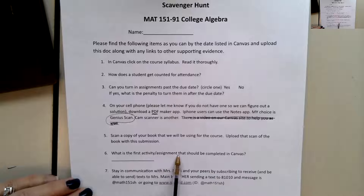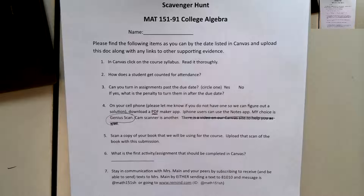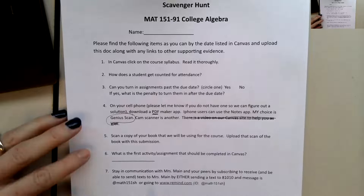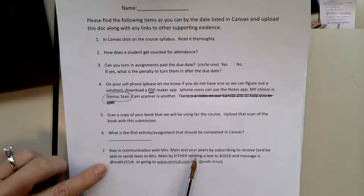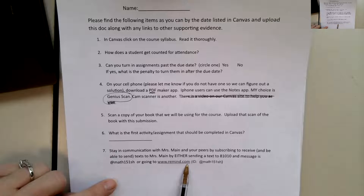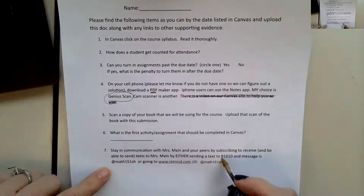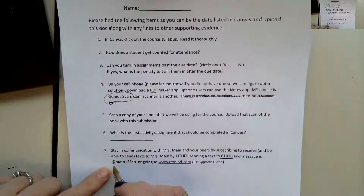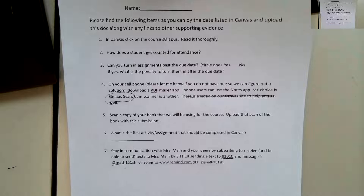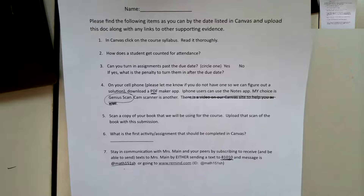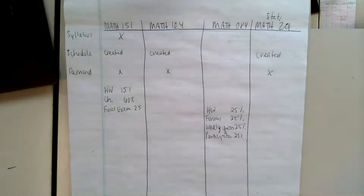What is the first activity that you're going to be completing in Canvas? Maybe you're looking at it right now. And last but not least, a great way for us to communicate is by subscribing to receive my texts through the Remind app. You can do it through a website, but if you have a cell phone, text the number 81010 and send the message shown here. You'll subscribe to my texts, and your peers will not see your messages, so you can send me questions right through there.